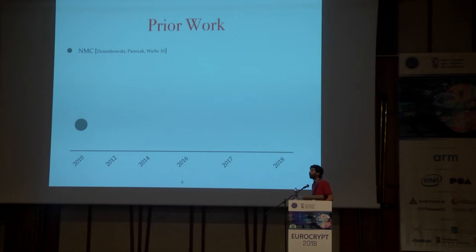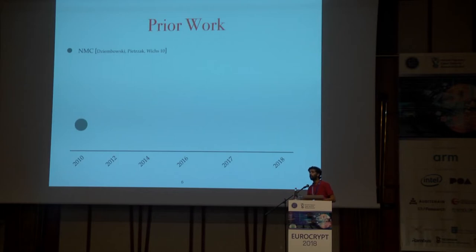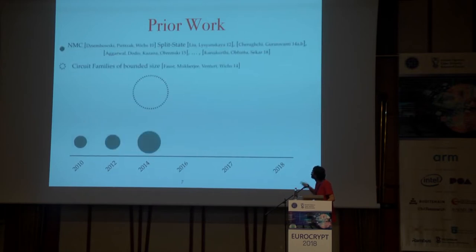Non-malleable codes were introduced by Dziembowski, Pietrzak, and Wichs in 2010. In the original result, they also showed an impossibility result: we cannot achieve tamper resilience against every efficient or polynomial tampering function, because a simple attacker can decode a message and then re-encode M plus 1, and there is no way to win against this. So we always have to restrict the tampering functions. This line has been studied extensively in the split-state model, with a lot of work on getting stronger split-state models or improving the efficiency and rate.